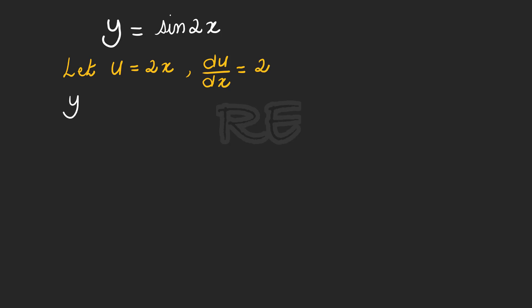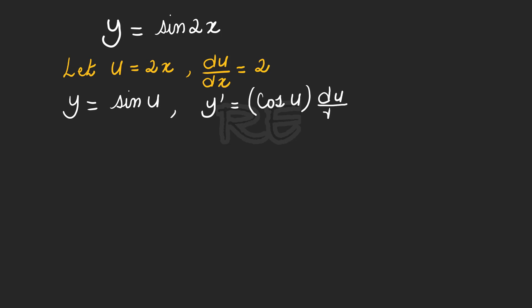Now we're going to write y as a function of u, so y will be equal to sine u. Its derivative y prime will be, according to the chain rule formula, cosine u times du/dx.